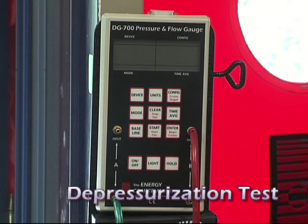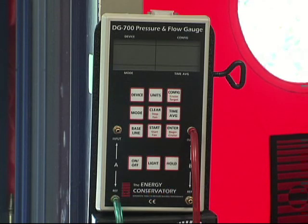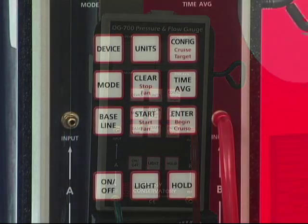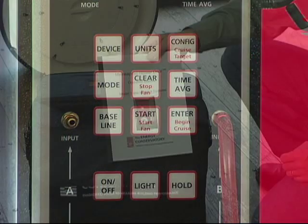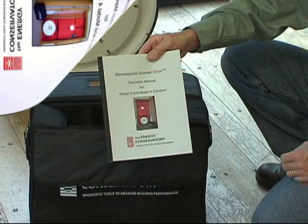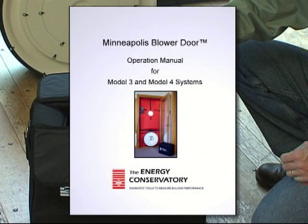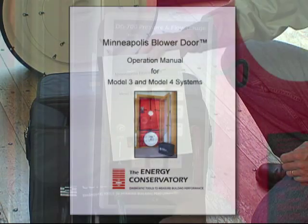We are going to perform a one-point depressurization test, showing you how to set up the DG700, the blower door fan, and take a reading. More information about this test and others is covered extensively in the manual.